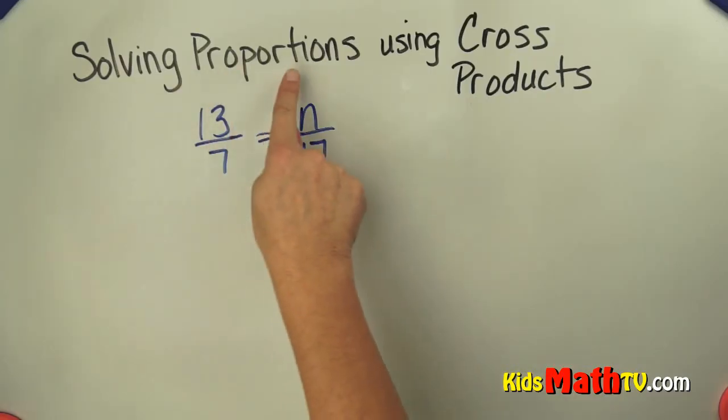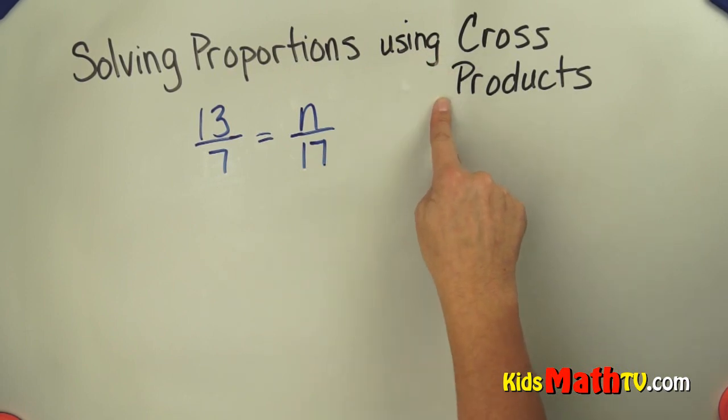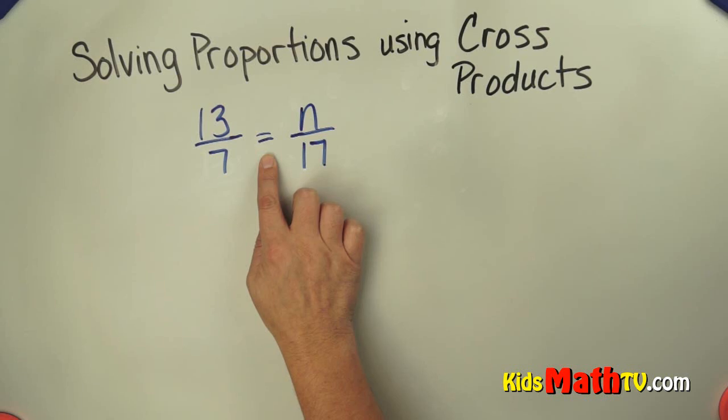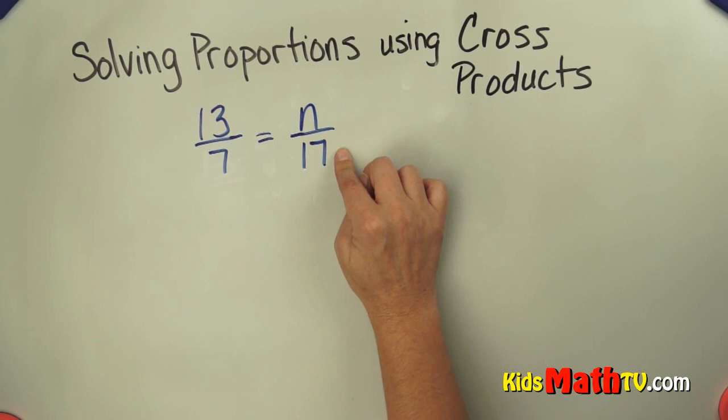In this lesson you will learn about solving proportions using cross products. So we have a proportion here, it's two ratios that are set to be equal. This ratio 13 over 7 is equal to some number over 17.